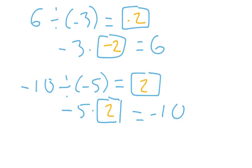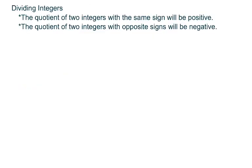Negative 10 divided by negative 5 equals positive 2. So where does that go? That actually illustrates pretty quickly some properties about dividing integers. The quotient of two integers with the same sign will be positive. The quotient of two integers with opposite signs will be negative.